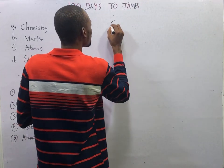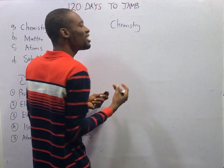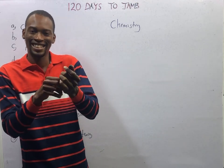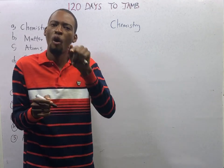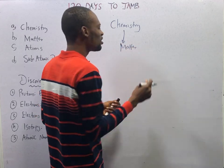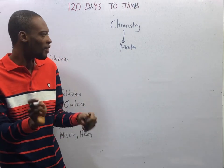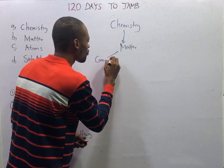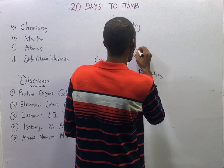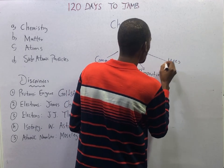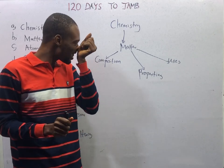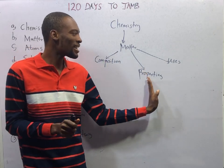Chemistry is the study of the composition, properties, and uses of matter. Which means chemistry studies matter — not just everything about matter, but the composition, the properties, and uses of matter. This implies that everything you are studying in chemistry is under the composition, properties, and uses of matter. No topic in chemistry is outside these three areas.